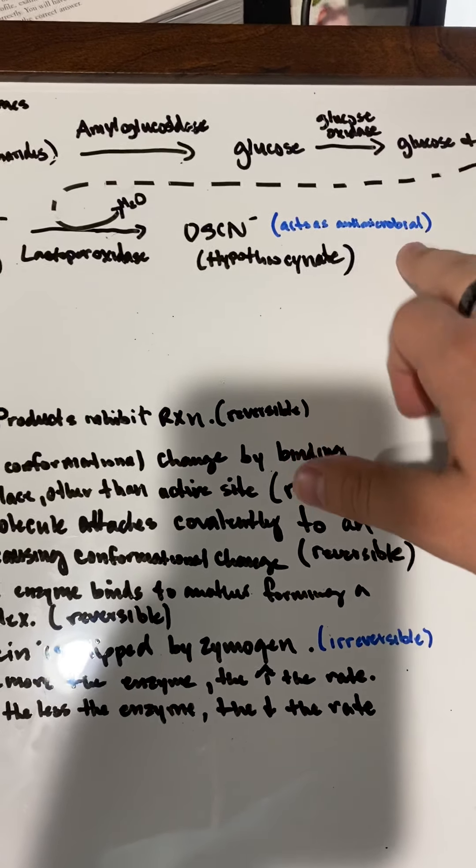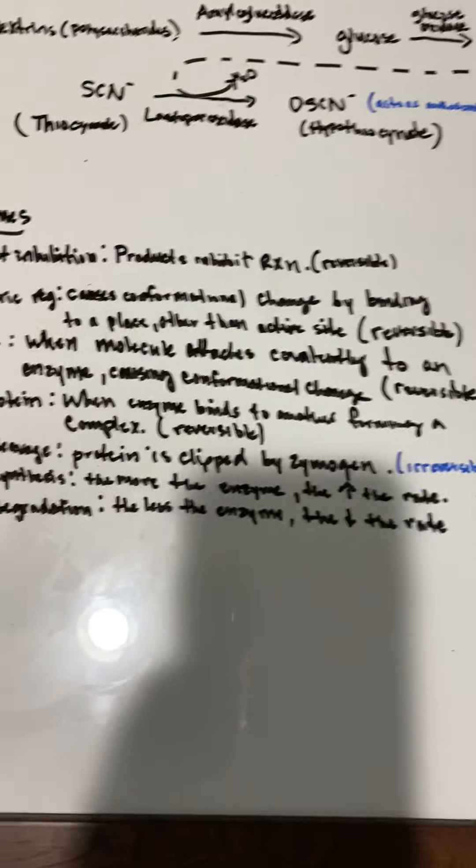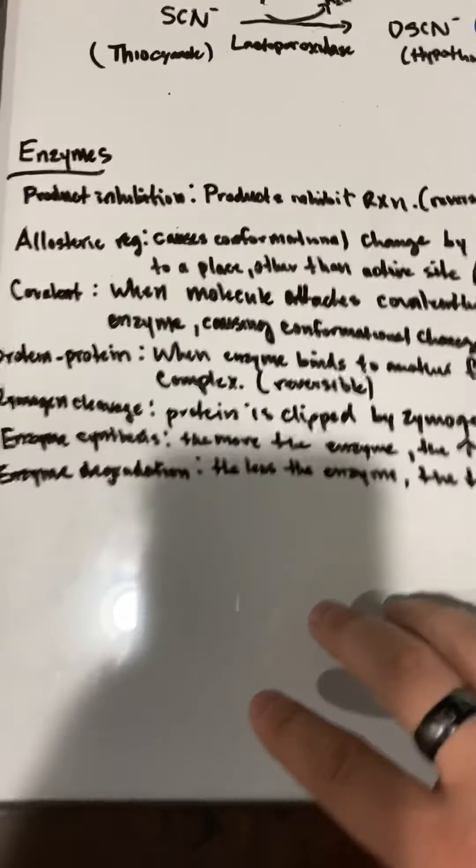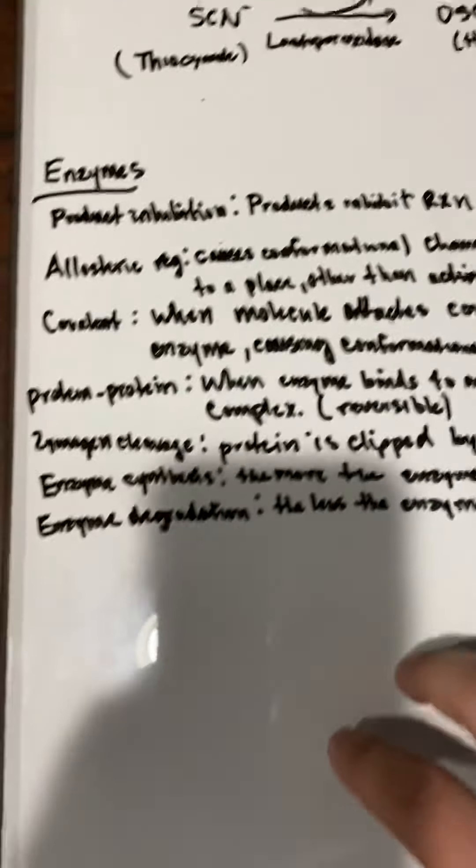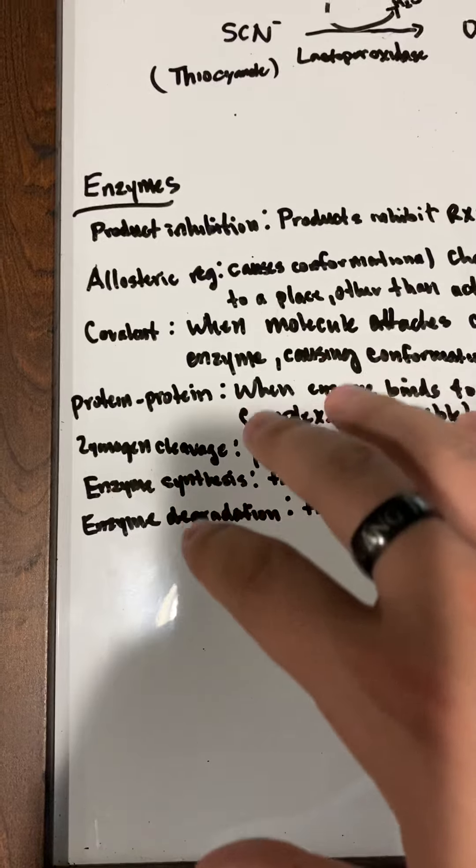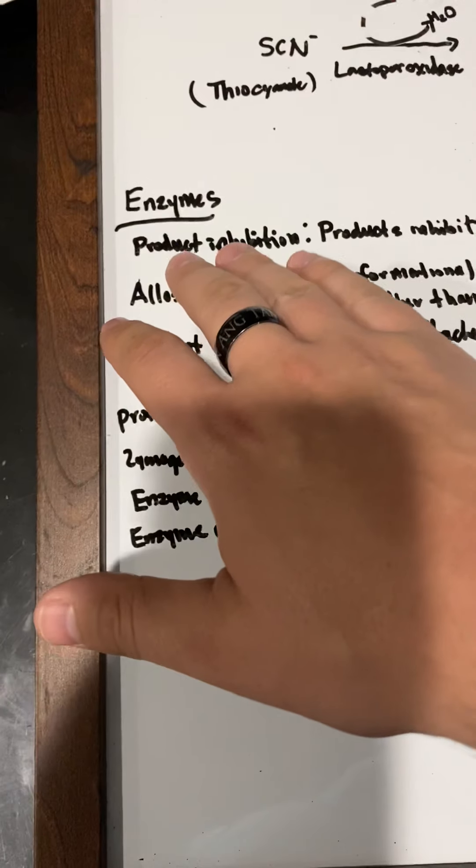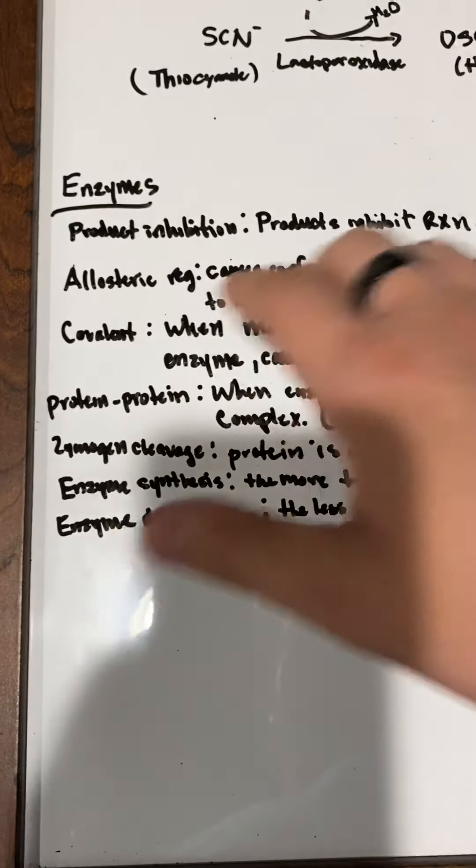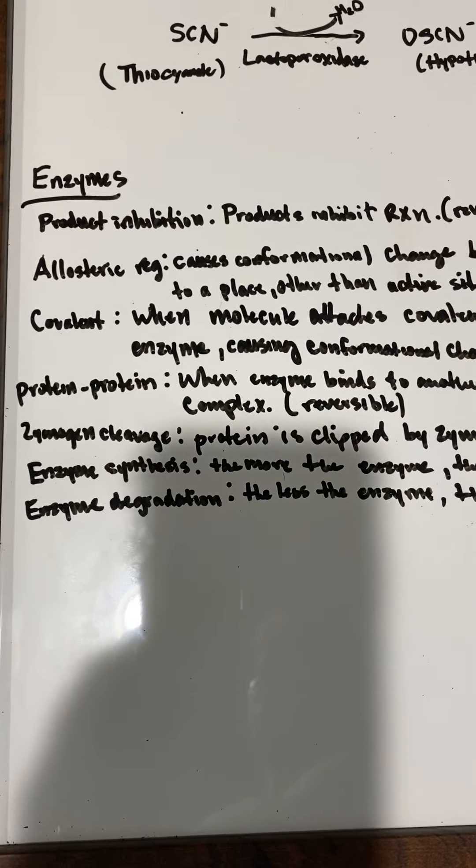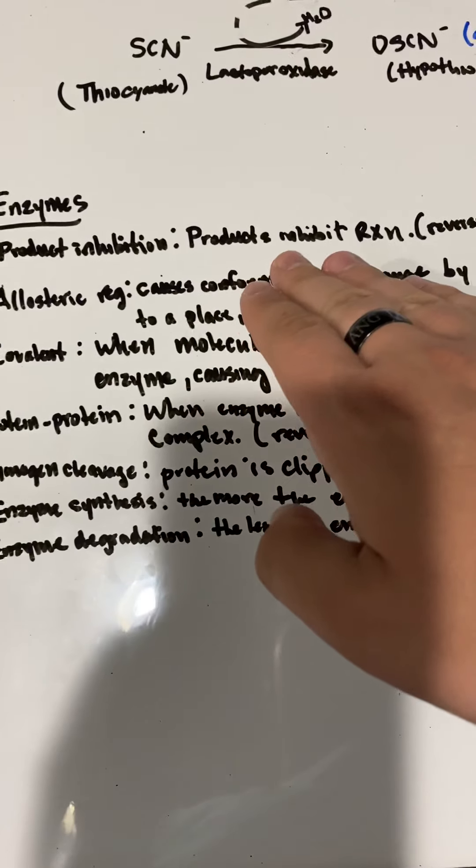I'm just going to read through the types of enzyme regulation we have. Product inhibition means that when we make products, the products actually will inhibit the reaction. This happens a lot in all the material we've studied so far.